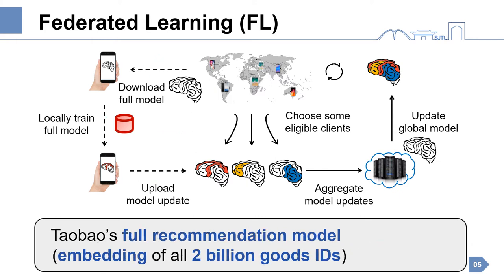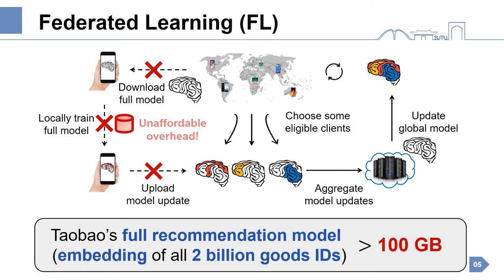However, in Taobao's context, the full recommendation model, which contains the embedding of 2 billion goods IDs, is larger than 100 gigabytes. This makes federated learning infeasible.